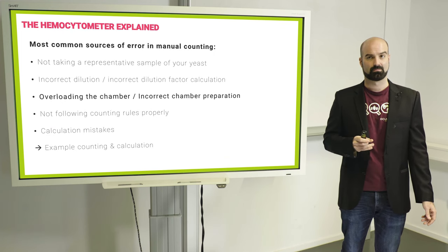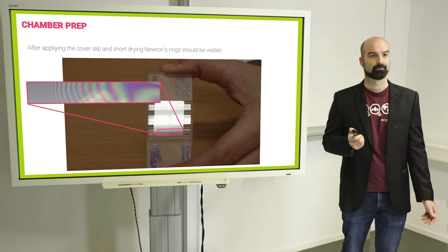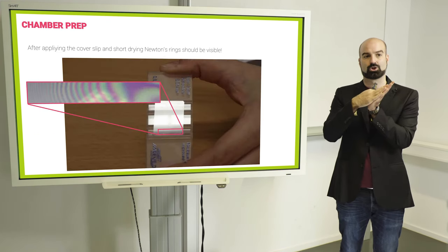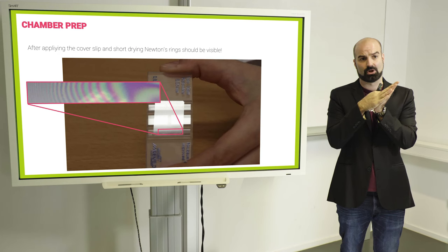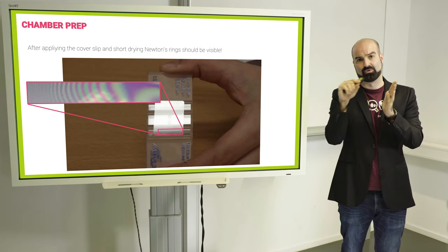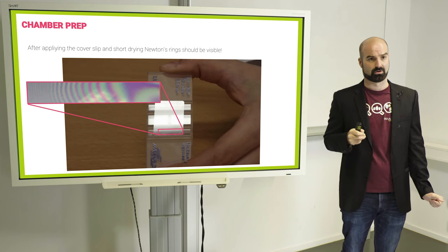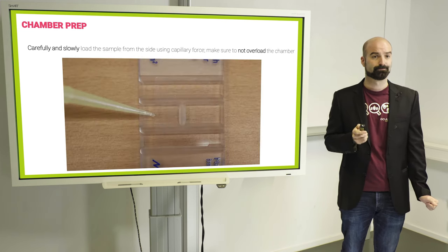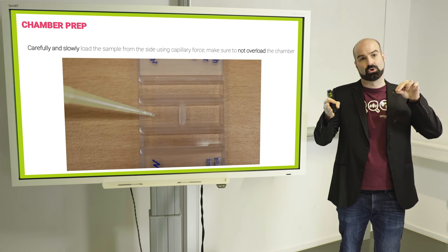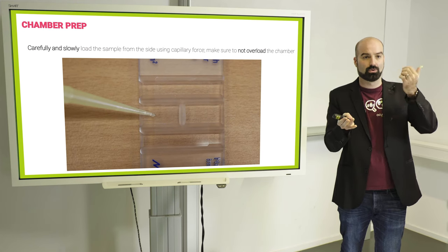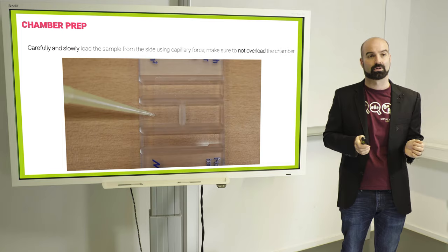Now, overloading the chamber. This is probably the second most common mistake that we see, that the Thoma chamber or Neubauer chamber is not prepared properly. When you're putting the cover slip on it, it should be held on by capillary force. And the way to check that this is properly done is you will see these Newton rings, which are basically interference patterns by the two glass parts sticking together. This is also explained in more detail in our other video, but just make sure you see these rings and load the sample from the side carefully with a pipette and let the capillary force suck your yeast solution under and into the chamber volume. And don't put the solution and then press the cover slip on top because you will not have a defined volume and you will not have an accurate count.